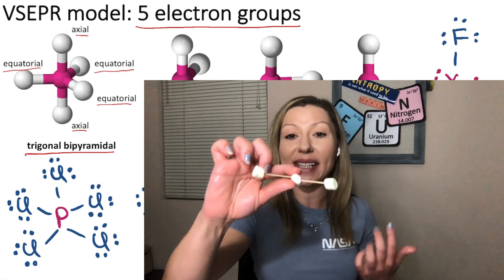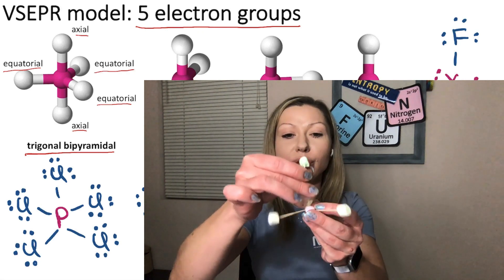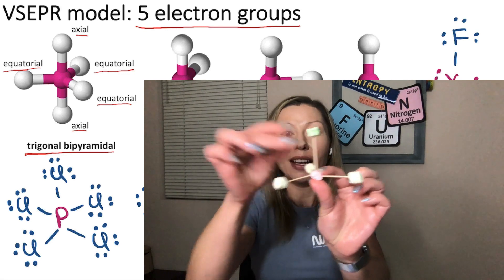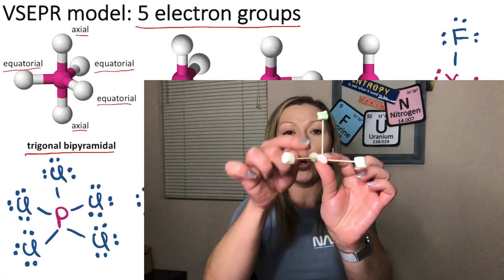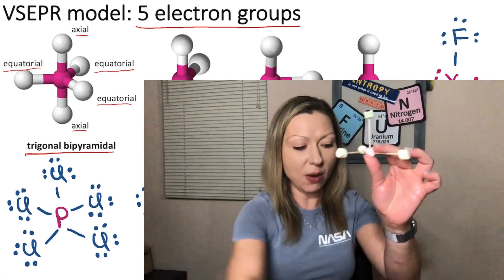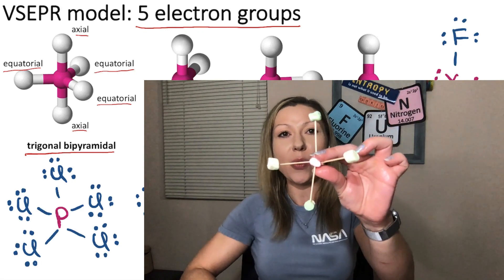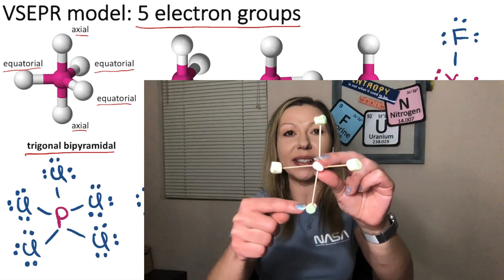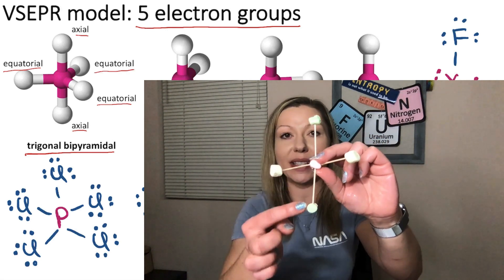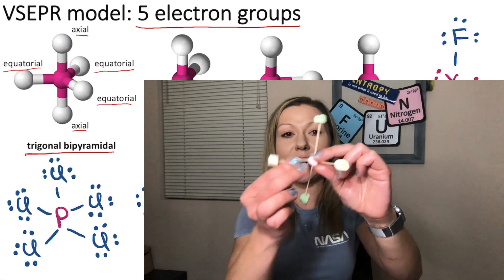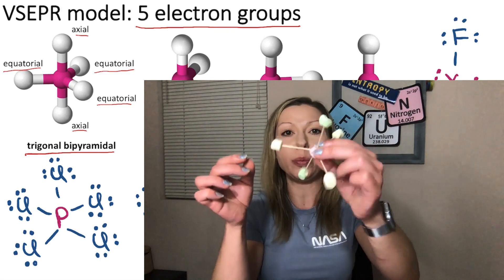How do we add the axial positions? We can simply add two more atoms 90 degrees from the plane of the trigonal planar shape — one on top and another one on the bottom. The two axial atoms actually show a linear structure, and the three equatorial atoms show a trigonal planar structure.